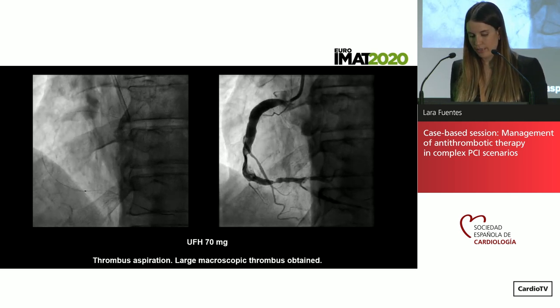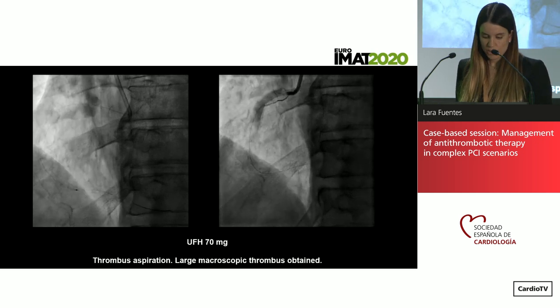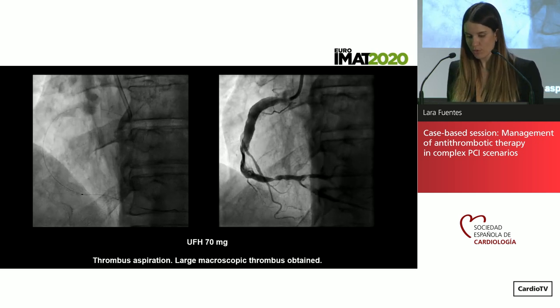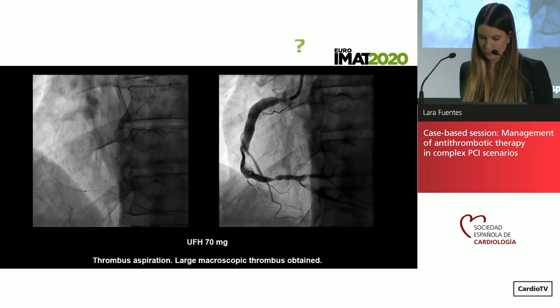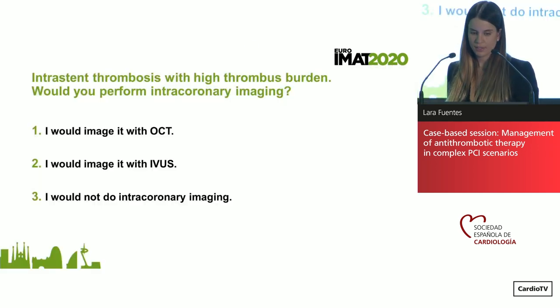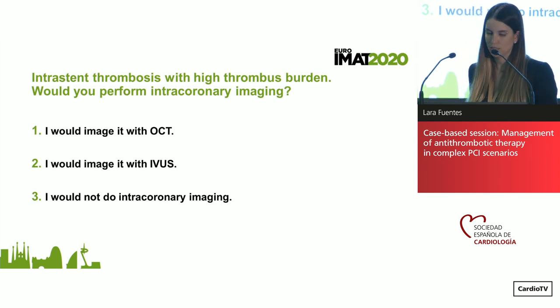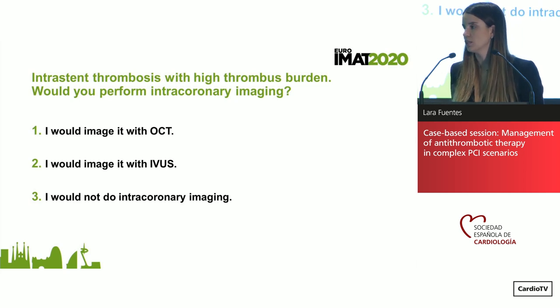Unfractionated heparin is given. Thrombus aspiration is performed, obtaining a large macroscopic thrombus. Here comes the first question: what intracoronary imaging would you perform? Remember: patient with coronary ectasia, high thrombus burden, probable very late stent thrombosis with two stents implanted in the distal RCA. Options: always OCT, IVUS, or no intracoronary imaging.